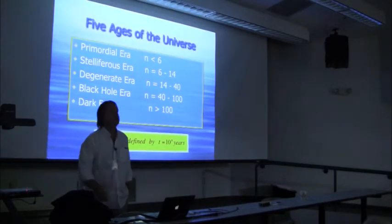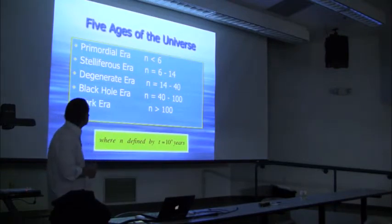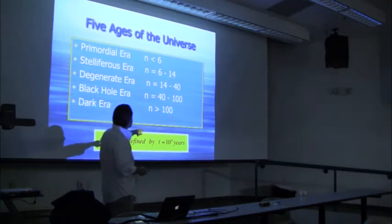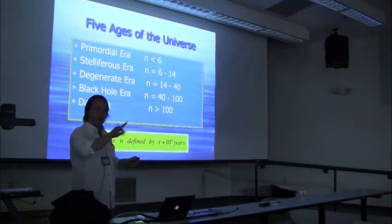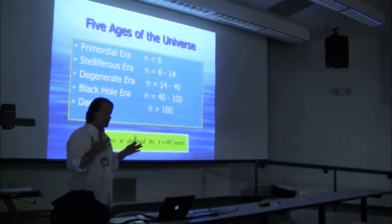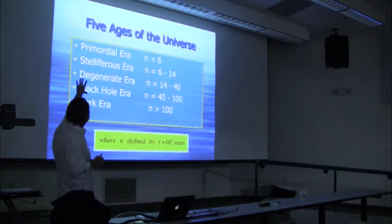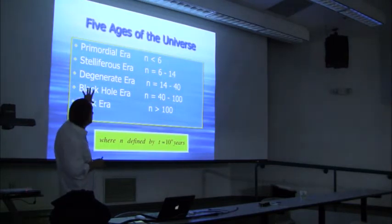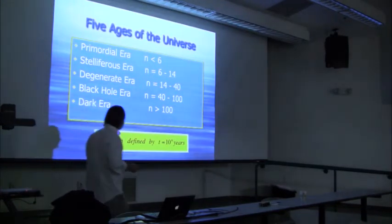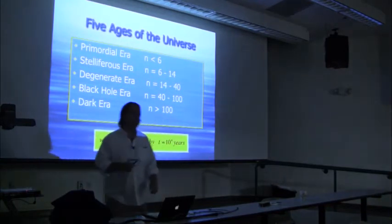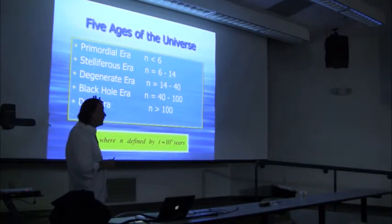We divided the history of the universe into five ages, and we measure time by what's called the cosmological decade — the time written as 10 to the n years. The universe is now 13.8 giga years old, meaning we're in cosmological decade 10, right in the middle of the stelliferous era. For the first million years there are no stars. Then stars form and we're in this bright era. The stars burn out and we enter the degenerate era, when degenerate stellar remnants are most important. That continues until protons decay — we don't really know this number, but we do think protons will eventually decay. Then black holes become the brightest things in the sky, they evaporate, and we're left in the fifth and final era.